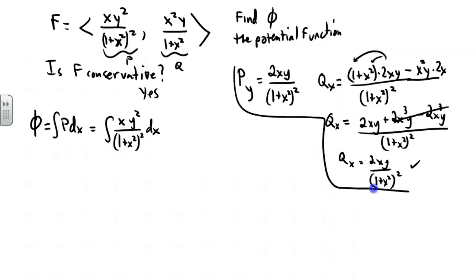If we let u equal 1 plus x squared, then du is going to be equal to 2x dx. So 1/2 of du will take the place of x dx. The y squared is just a constant, so let's multiply both sides by y squared.